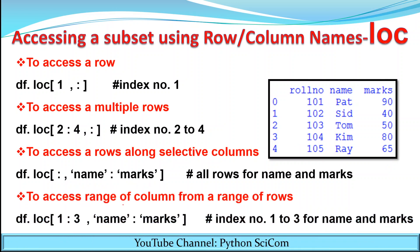LOC can also be used to modify values in the DataFrame. To modify a specific cell, use the syntax: df.loc[row_label][column_name] = new_value. For example, to find the value at row 'beta' and column 'marks', you proceed to row beta and column marks. I want to change the value 80 to 85. So I write df.loc['beta']['marks'] = 85. This navigates to that specific cell location and stores the value 85 there.